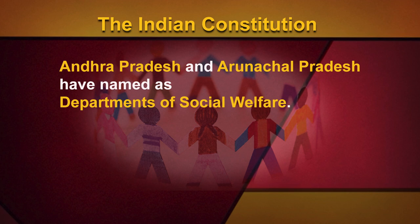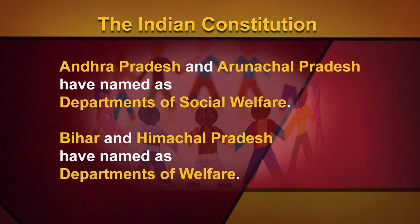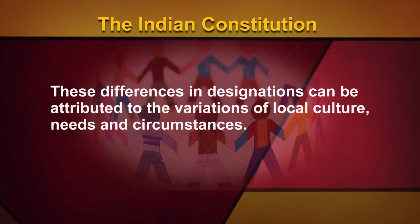Most states have established departments concerned with welfare activities under one nomenclature or another in conjunction with other departments. For example, Andhra Pradesh and Arunachal Pradesh have named them as departments of social welfare, while Bihar and Himachal Pradesh have named them as departments of welfare. These differences in designations can be attributed to variations of local culture, needs and circumstances. There are also other departments involved in the implementation of social welfare programs.